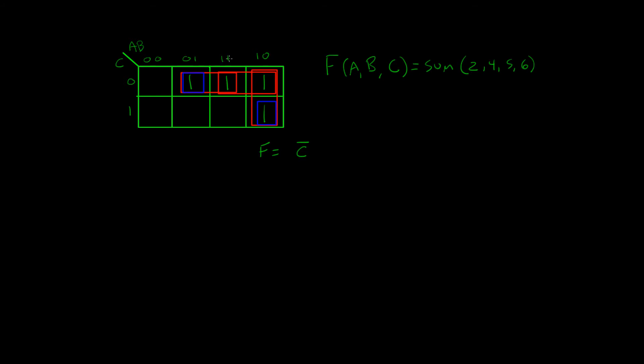You see that b has a value of 1. a has a value of both 0 and 1, so we're not going to use that. So we have b not c. So we've taken care of these two 1's right here.